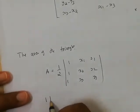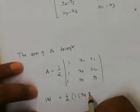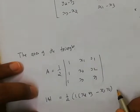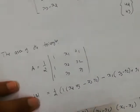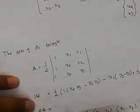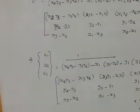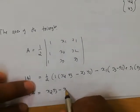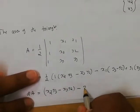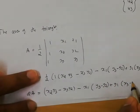Finding the determinant, the area A is equal to 1/2 times [1 times (x2*y3 minus x3*y2) minus x1 times (y3 minus y2) plus y1 times (x3 minus x2)]. So 2A is equal to x2*y3 minus x3*y2 minus x1*(y3 minus y2) plus y1*(x3 minus x2).